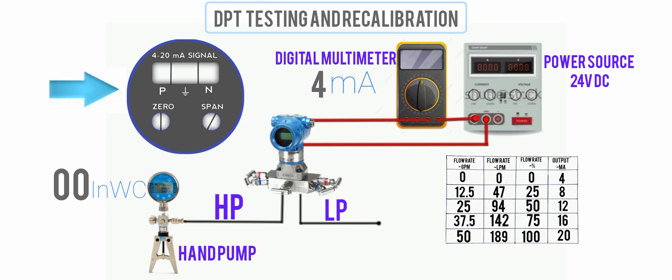Apply the 100 percent input pressure value, which for us is 200 inches water column, to the transmitter and adjust the span until we get an output current of 20 milliamps. Repeat the steps until adjustments are no longer required.